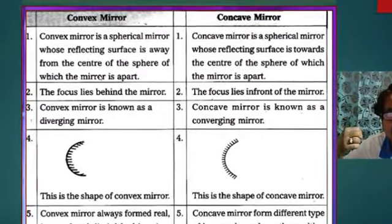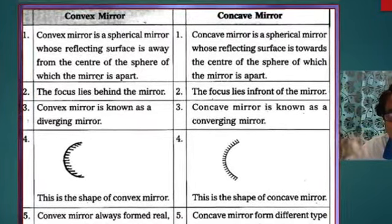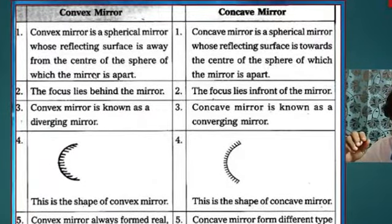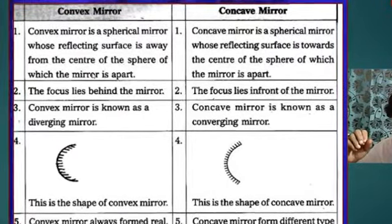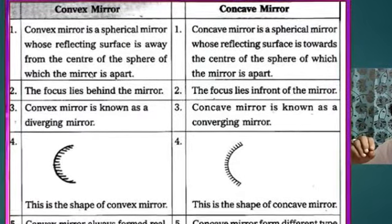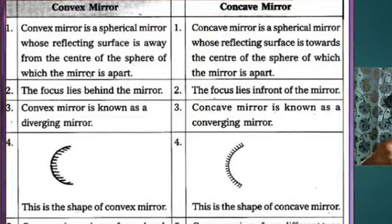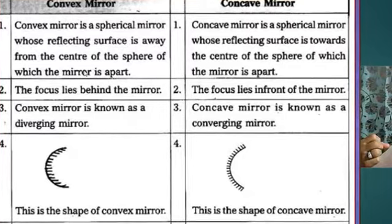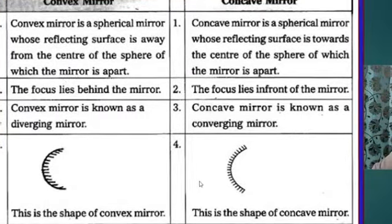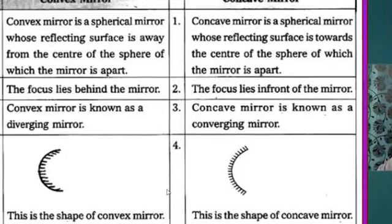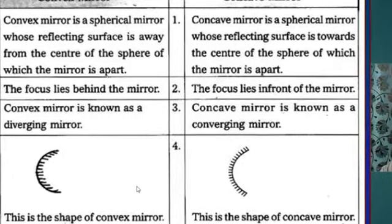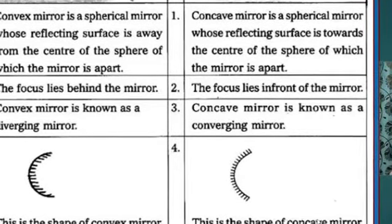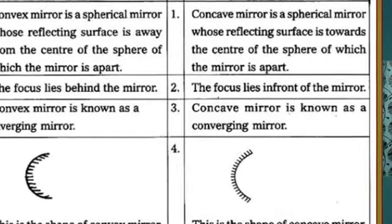Third, convex mirror is known as diverging mirror and concave mirror is known as converging mirror. Last, convex mirror always forms a real, inverted, and diminished image, whereas concave mirror forms different types of images depending on the position of the object. Here I try to show a clip with animation effect so you can understand what will happen.